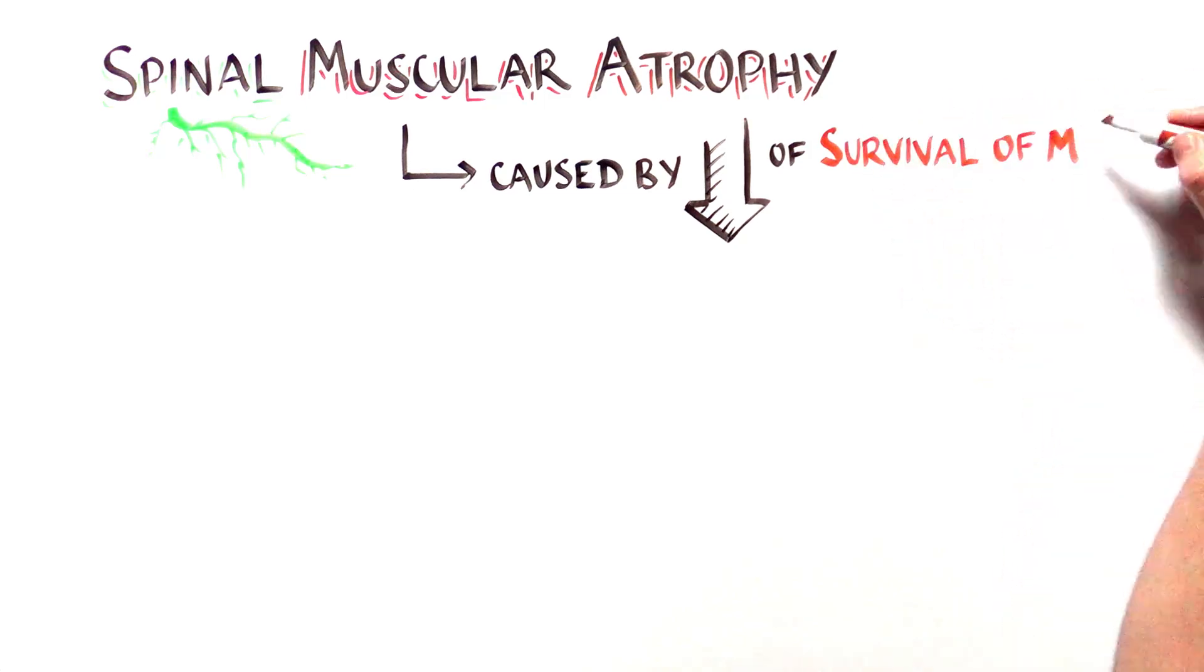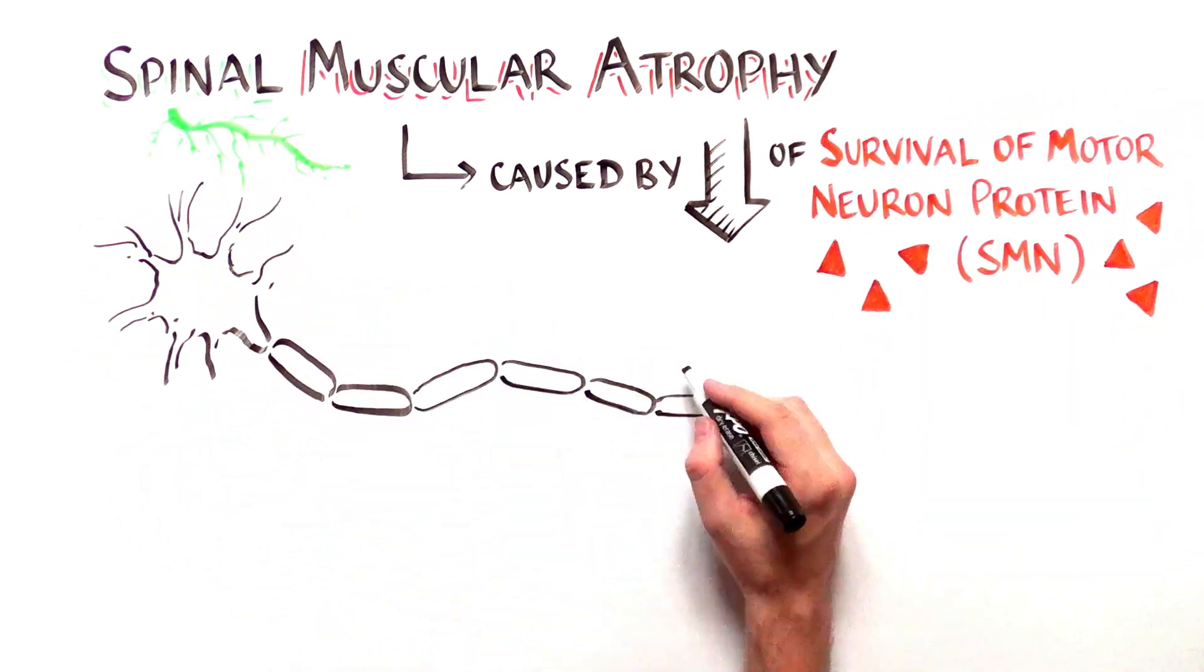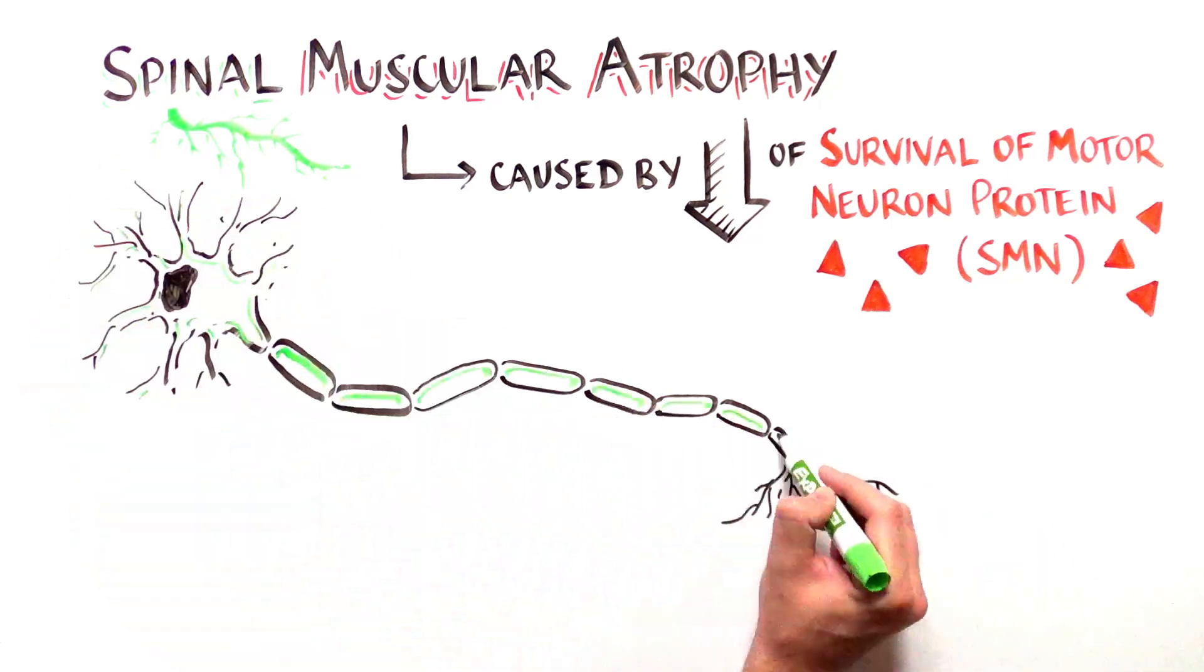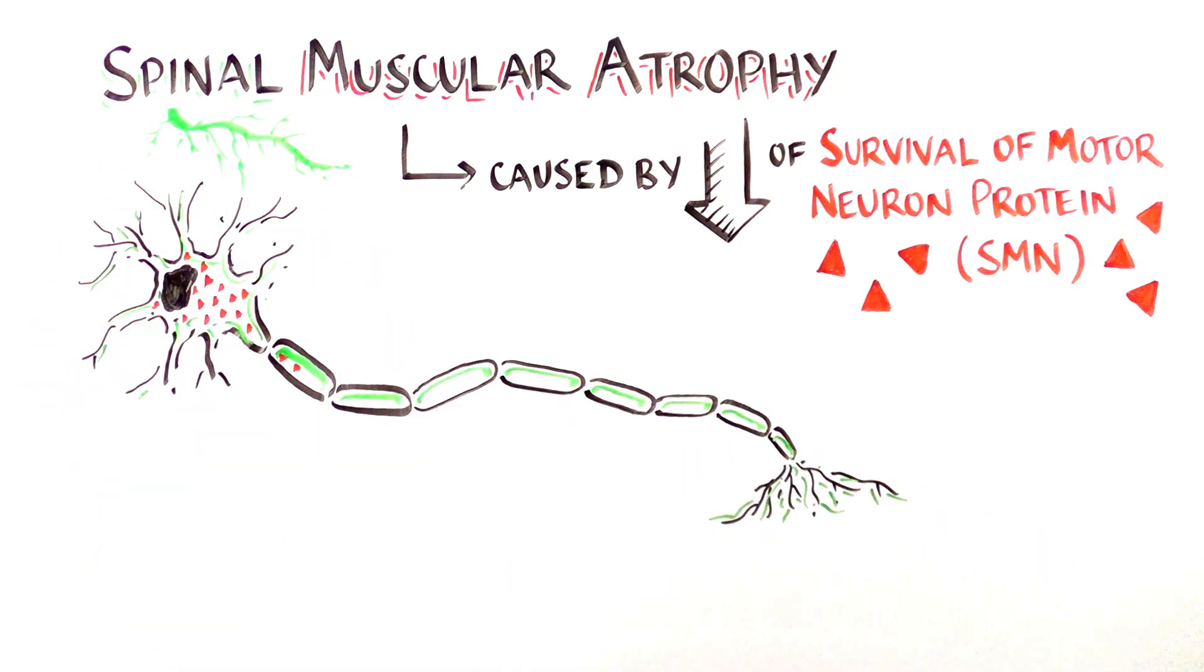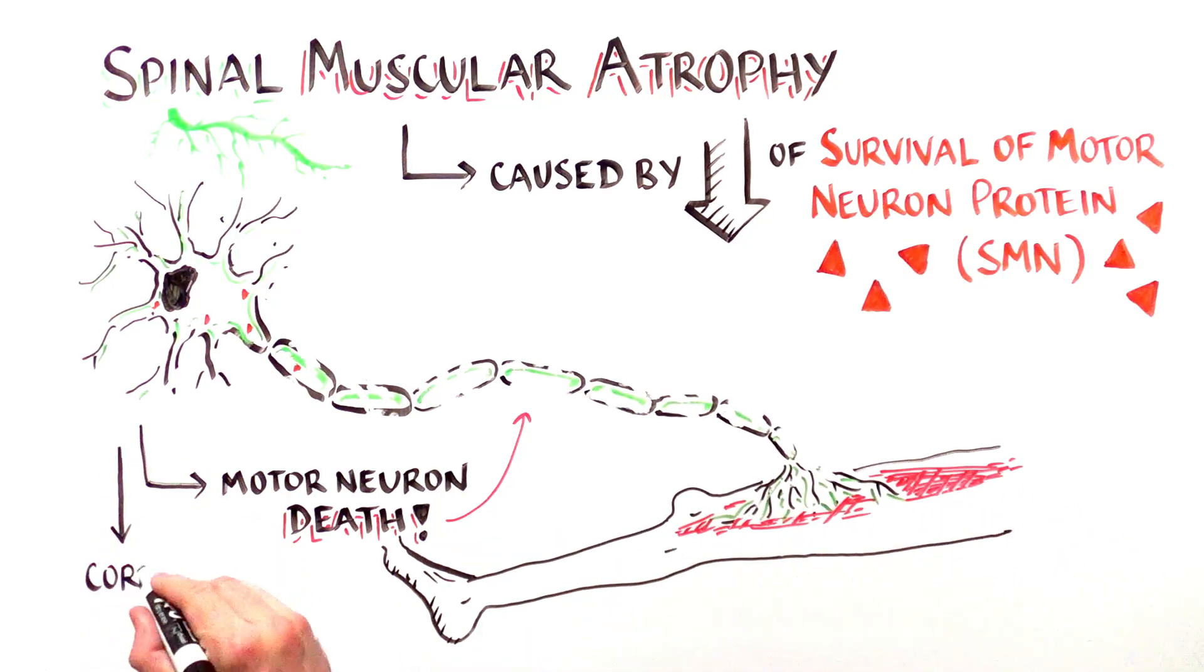SMA is caused by too little of a vital protein called survival of motor neuron or SMN in the spinal cord's motor neurons. Too little of this protein causes the motor neurons to die and the muscles they control to waste away.